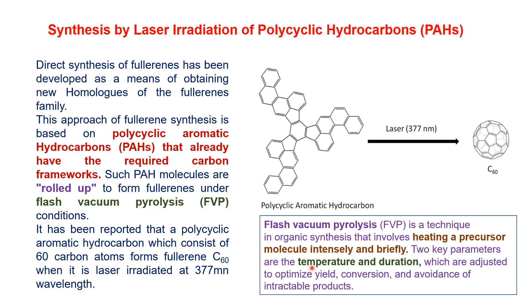Two main parameters must be controlled in this process: temperature and the duration of the heating time. It has been reported that a polycyclic aromatic hydrocarbon consisting of 60 carbon atoms forms fullerene C60 when laser irradiated at a wavelength of 377 nanometers. The laser irradiation at 377 nm produces C60 via flash vacuum pyrolysis, where temperature and heating duration must be carefully controlled.